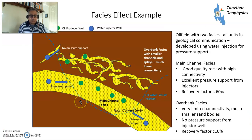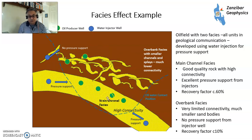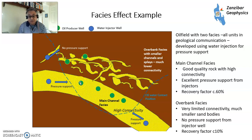Here's an example from an oil field I worked on during my career. You have a big fat channel — 100% sand, main channel facies — and then overbank facies on the side. With the channel, you have production wells in the middle, a common oil-water contact for the whole field, so everything talks to each other in geological time. You get pressure support from two injector wells and some producers. Excellent pressure support. Recovery factor for this plot was around 60% of our in-place estimates — pretty damn good.